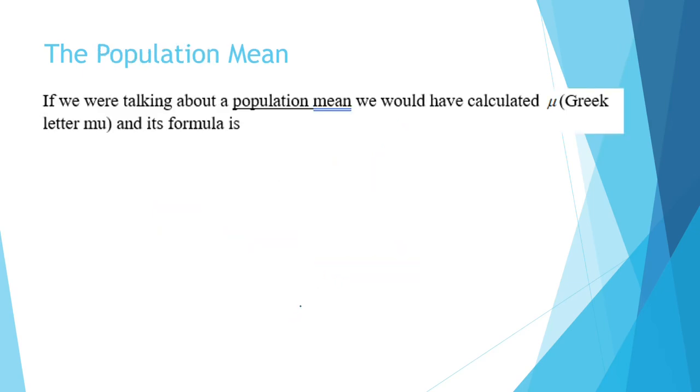To calculate the population mean, we use the Greek symbol mu. And the formula is exactly the same. We have to take the summation of the x values and divided by the population size. Now we use a big N for the denominator because big N represents the population size.